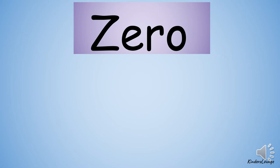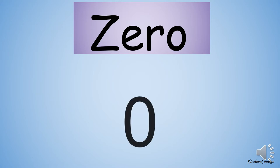The first number is zero — Z E R O, zero. Zero goes round and round, and zero means nothing.